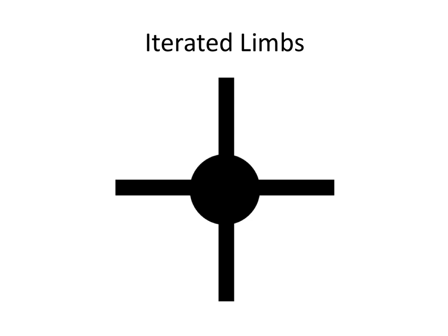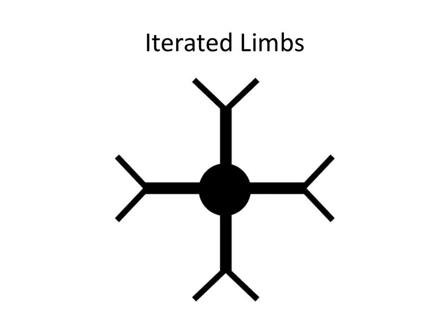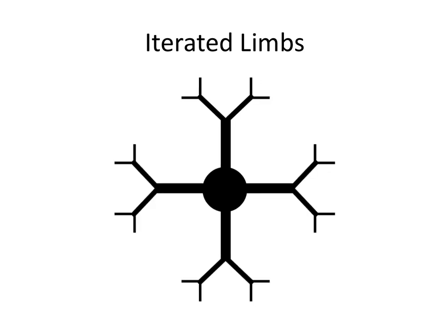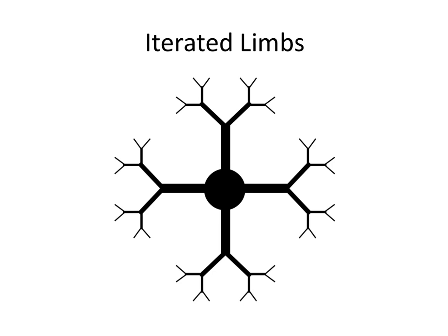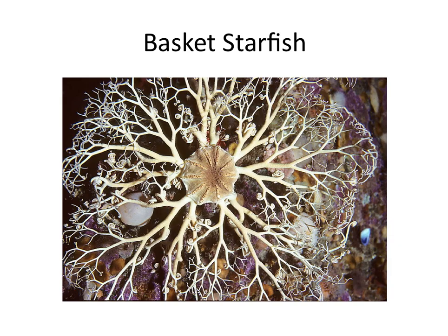Let's look at this again with iterated limbs. We have the form of a cross: a body in the center with four limbs radiating out, then limbs on limbs on limbs. This occurs in nature in the basket starfish — it's only finite, but you get the idea. And basket starfishes could be iterated to infinity. Let me recommend Hans Moravec's book Mind Children for his bush robots.